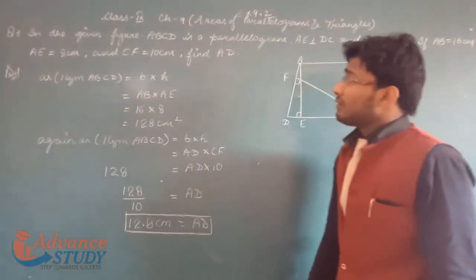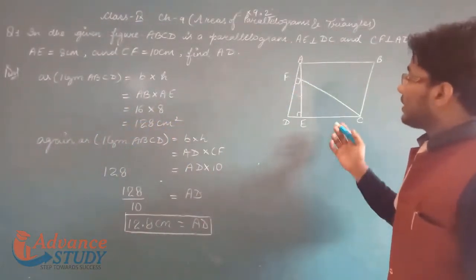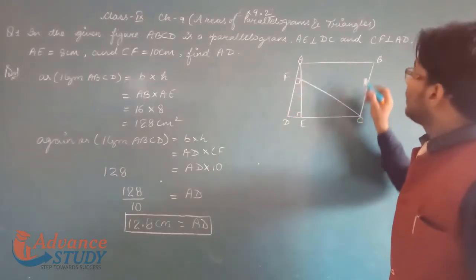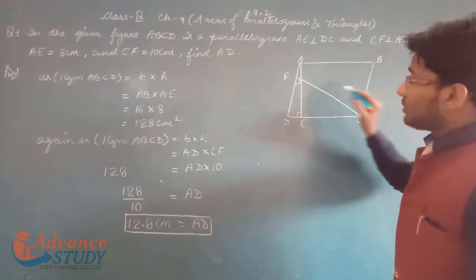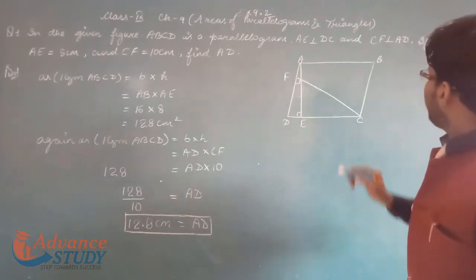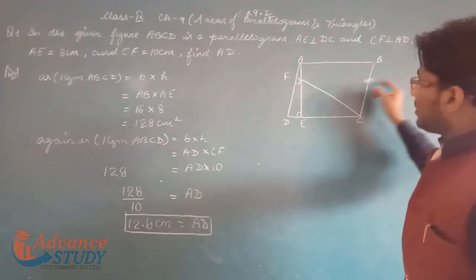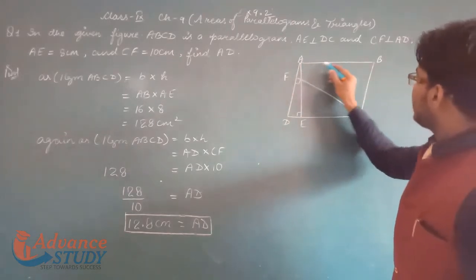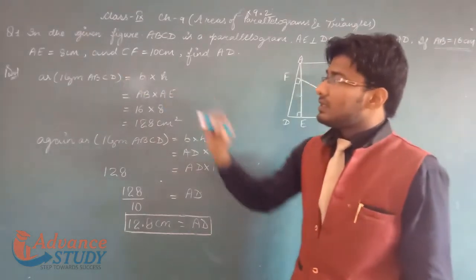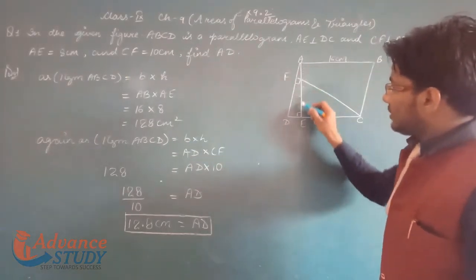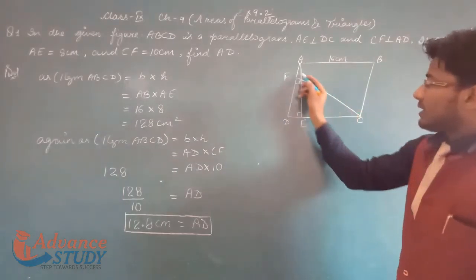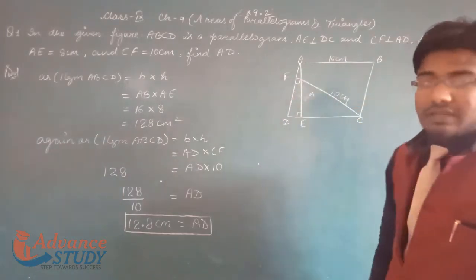In the given figure, ABCD is a parallelogram. AE is perpendicular to DC, and CF is perpendicular to AB. AB is equal to 16 cm, AE is equal to 8 cm, and CF is equal to 10 cm.